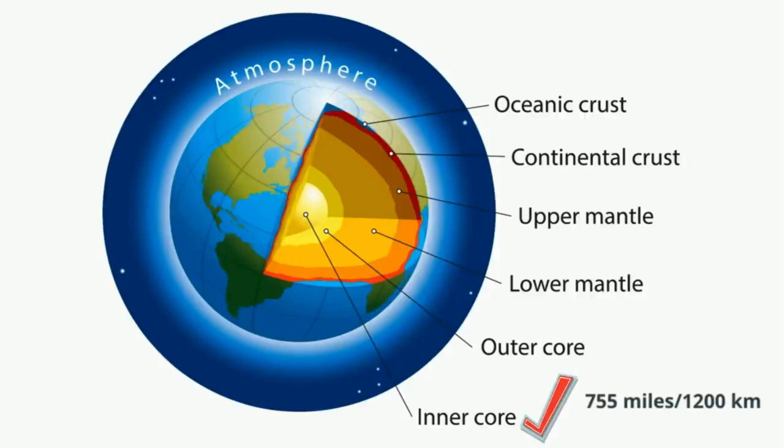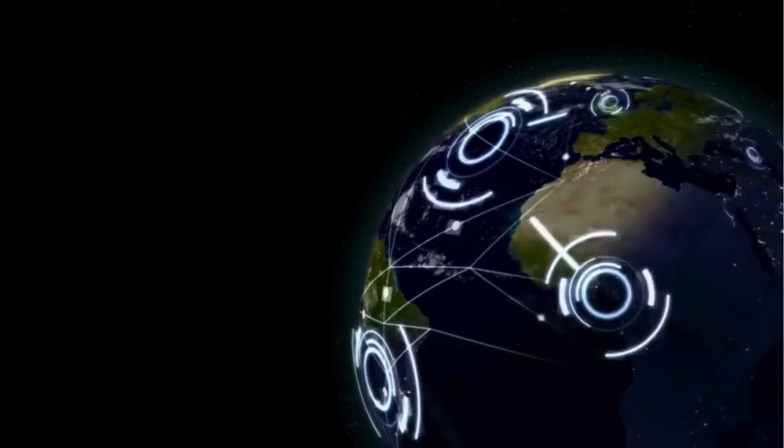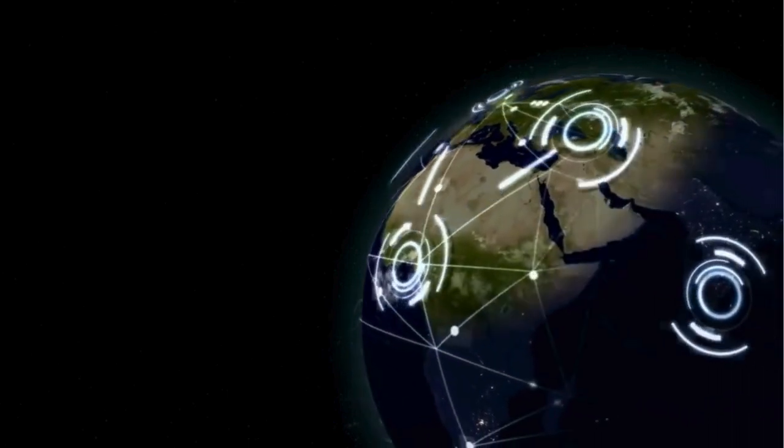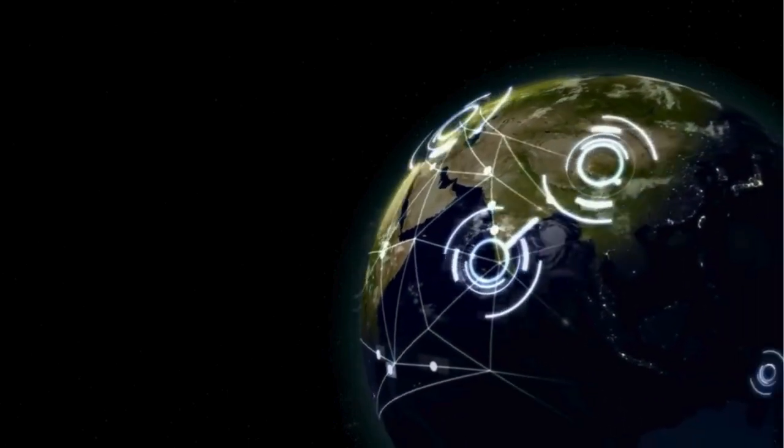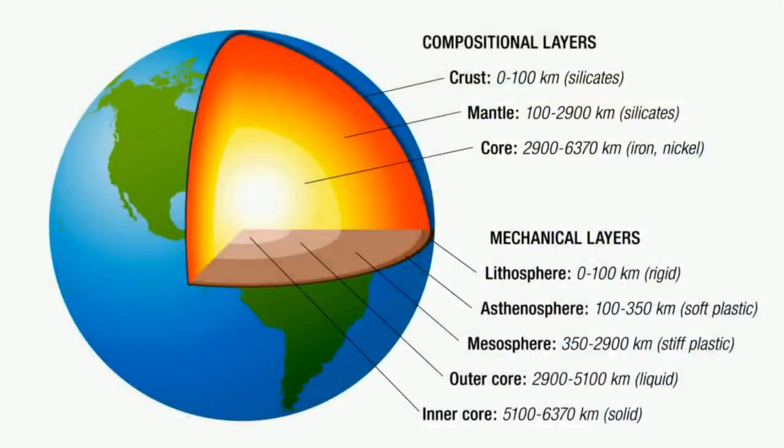The earth can also be divided into layers based on physical properties such as whether the layer is solid or liquid. The five physical layers are the lithosphere, asthenosphere, mesosphere, outer core and inner core.